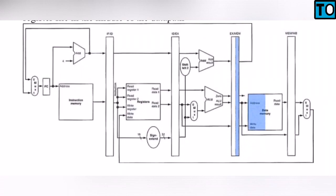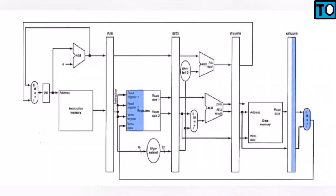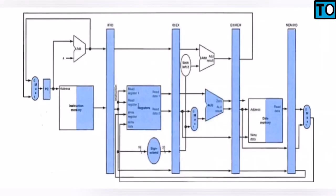The read and write operation is on the data memory. You have a memory and a write-back step. You have a diagram display with two steps. You can see a sample picture. You have 5 stages of the pipeline operation.